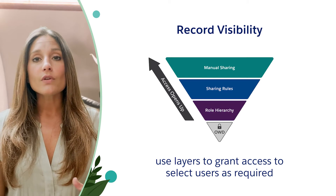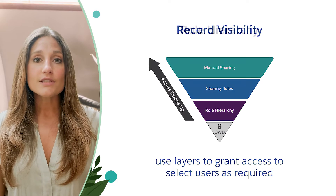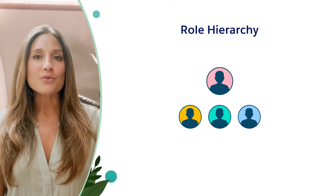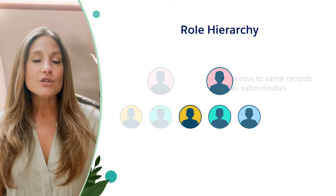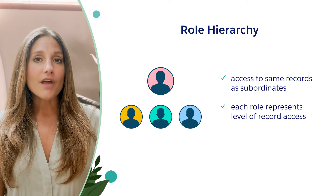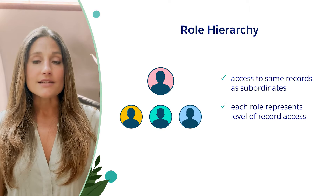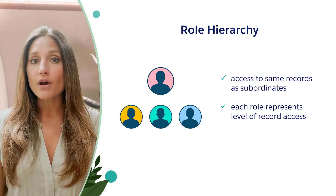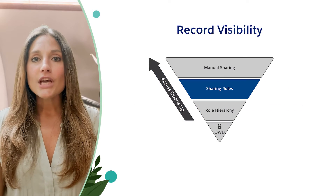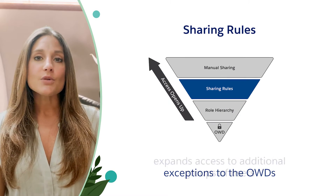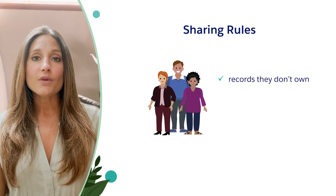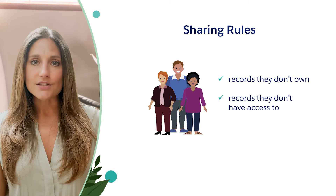These different tools or layers include, first, using a role hierarchy. Role hierarchies ensure that managers, directors, and VP levels have access to the same records as their reports or subordinates. Each role in the hierarchy represents a level of record access that a user or group of users need. Another layer is sharing rules — sharing rules are exceptions to the OWDs to expand access to additional groups of users, giving them access to records they don't own or don't have access to.